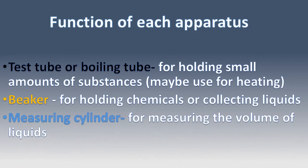Now we are looking at the functions of each apparatus. The first one is the test tube, otherwise known as the boiling tube, and it is used for holding small amounts of substances. It can also be used for heating depending on the experiment being carried out in the lab.